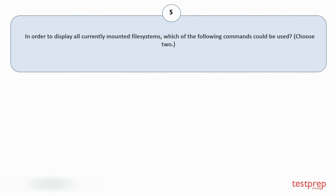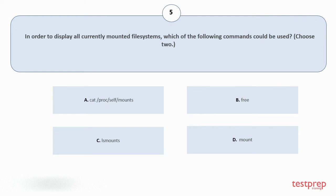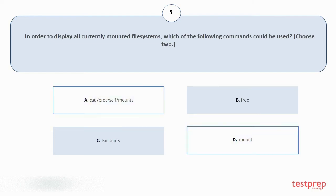Question number 5: in order to display all currently mounted file systems, which of the following commands could be used? Choose 2. Your options are: a. cat /proc/self/mounts, b. free, c. df mounts, d. mount. The correct answers are option A and D.